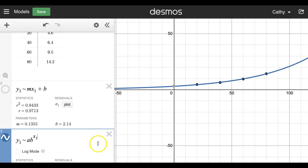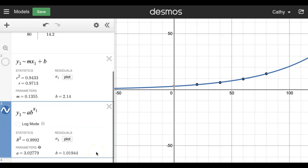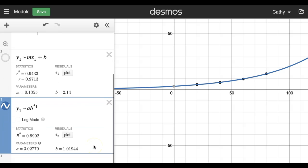And it is going to do the computations, and my model would now be y equals 3.0 times 1.02 to the x would be our model. And look at this, this fits much better. R squared is 0.9992.